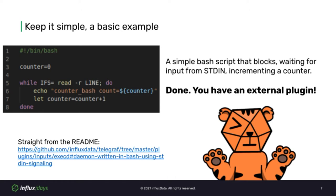And with just these few lines of code, you already have an external input plugin. The ExecD input plugin is able to run the script and signal for more metrics using a new line from standard in, and then read and parse the resulting metric from standard out. This example isn't doing anything useful, but it already shows off one of the coolest features of external plugins — you now have an extension to Telegraph written in a completely different language.